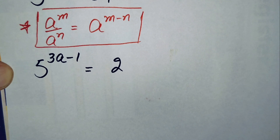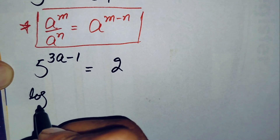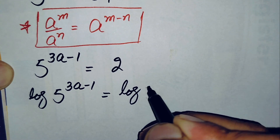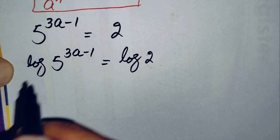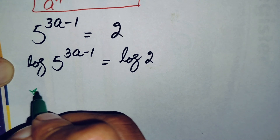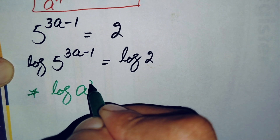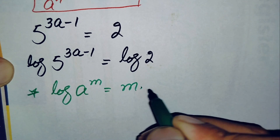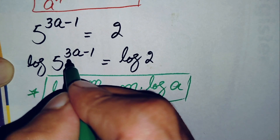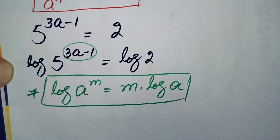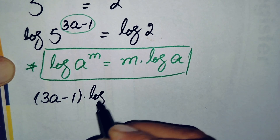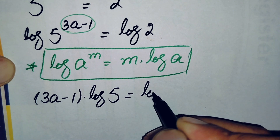To find the value of a, we will take the common log on both sides. So we get log of 5 raised to power (3a − 1) equals log of 2. Using the logarithm power rule — log(s^m) = m·log(s) — we move the power to the front, giving us (3a − 1) times log 5 equals log 2.